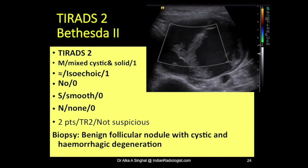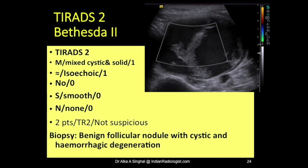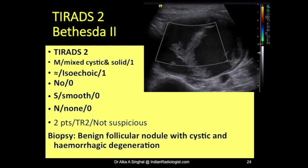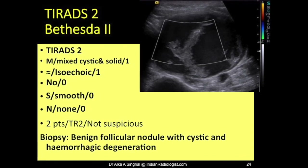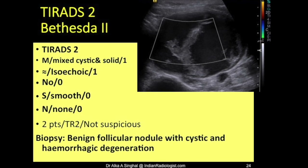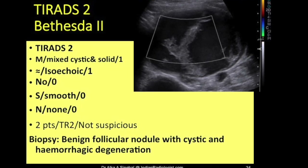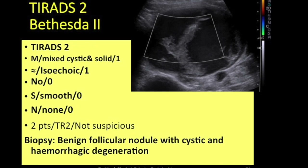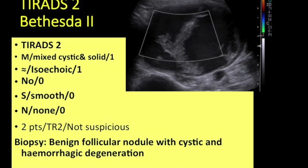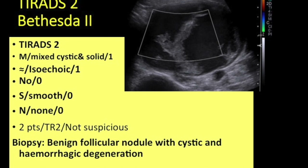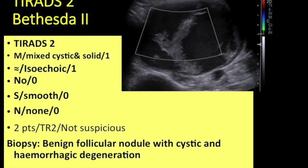Next case: a large mixed solid-cystic nodule gets one point for composition. It is hypo- to hyperechoic — isoechoic component gets one. Not taller than wide, margins are smooth, no calcification. Total: two points, TR2. Biopsy came back as benign follicular nodule with cystic and hemorrhagic degeneration.